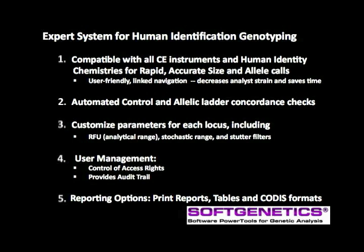GeneMarkerHID is an expert system for human identification genotyping from short tandem repeat, or STR, data. The program is compatible with all CE instruments and human identification chemistries, providing rapid, accurate size and allele calls. The user-friendly linked navigation decreases analyst fatigue and saves time. The program includes automated control and allelic ladder concordance checks and the ability to customize quality flagging parameters for each locus, including settings for analytical range, stochastic range, stutter filters, and heterozygous imbalance level.